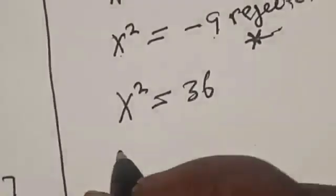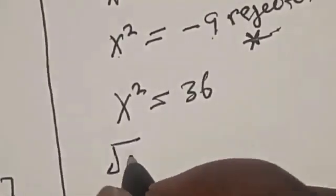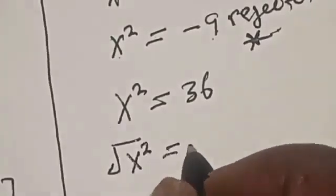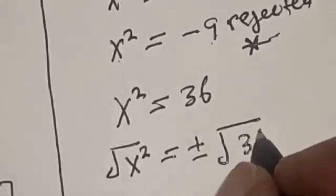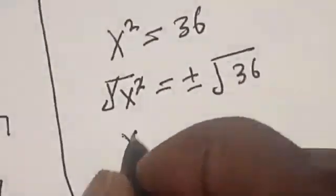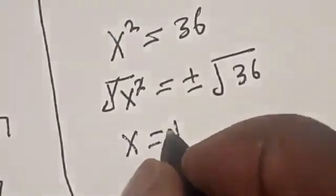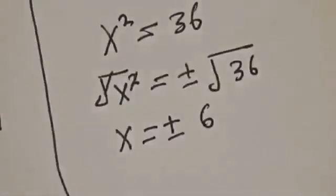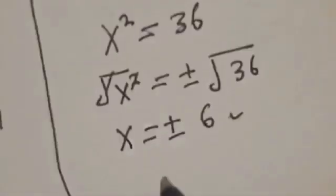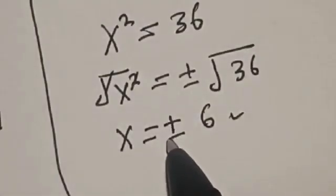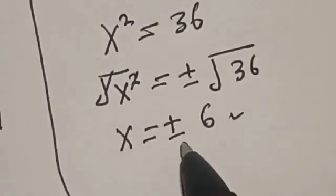Let's take the square root of both sides. x squared equals 36, so taking the square root gives x equals plus or minus 6. We've now found the value of x. Let's substitute x into one of the equations — equation 2 — to find the value of y.